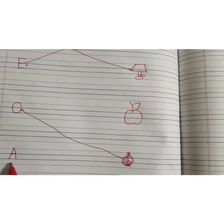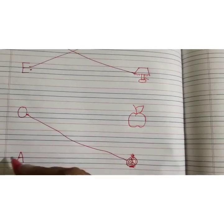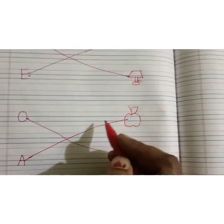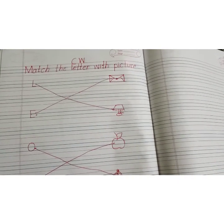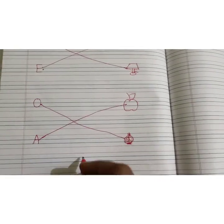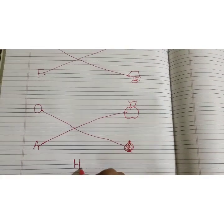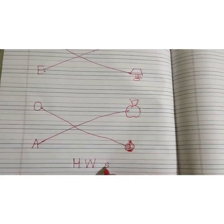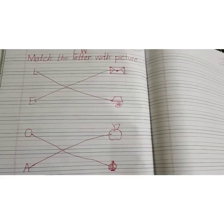Yes. Which letter is this? A. A says apple. So go with apple. This is the match the letter with the picture activity. Okay. Write it down here. HW — same. Okay. Write it. Bye-bye.